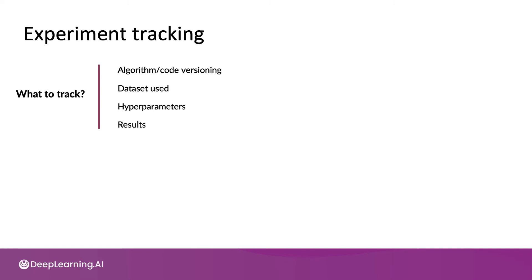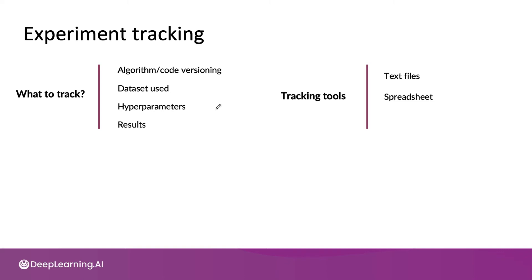So how can you track these things? Here are some tracking tools you might consider. A lot of individuals and sometimes even teams will start off with text files. When I'm running an experiment by myself, I might use a text file to just make a note with a few lines of text per experiment to note down what I was doing. This does not scale well, but it may be okay for small experiments. A lot of teams then migrate from text files to spreadsheets, especially shared spreadsheets, where different columns can keep track of the different things you want to track for the different experiments you're running. Spreadsheets actually scale quite a bit further, especially shared spreadsheets that multiple members of a team may be able to look at.